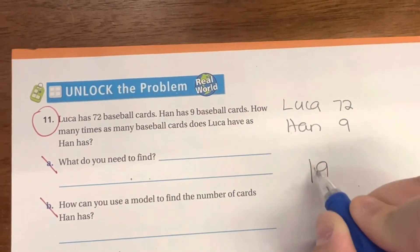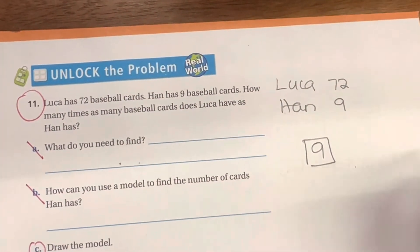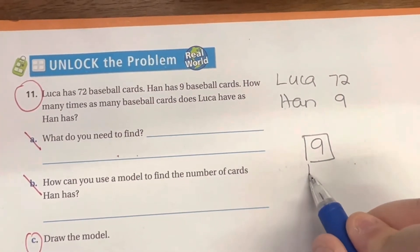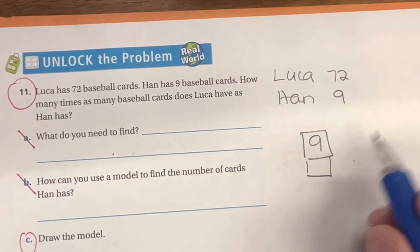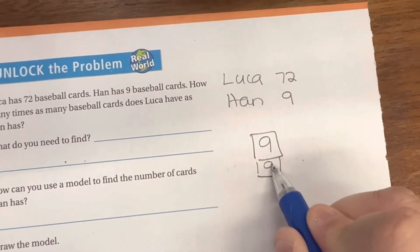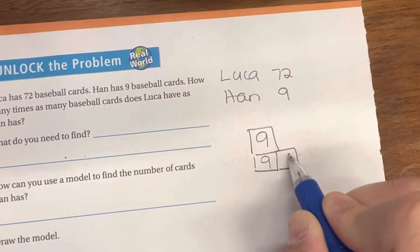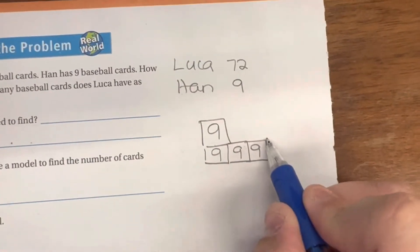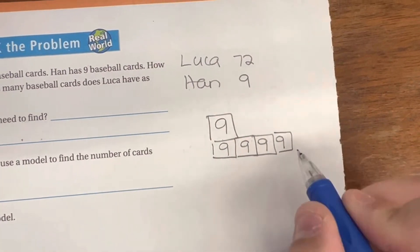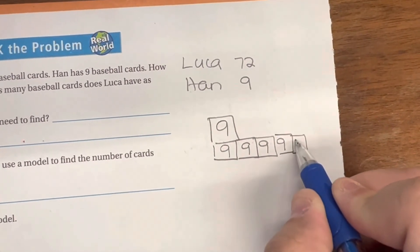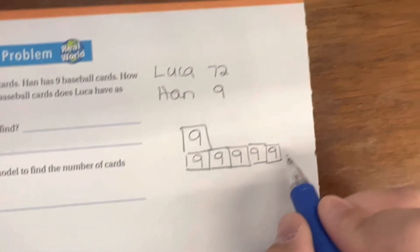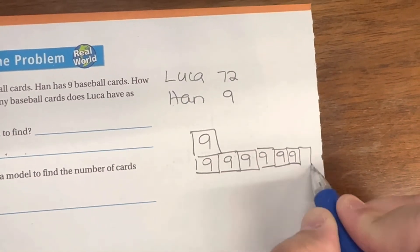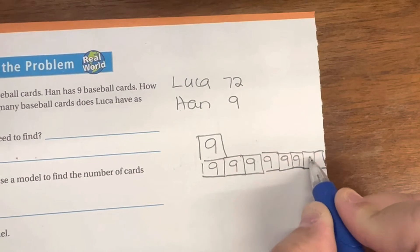So if Han has 9, how many of these 9s do I have to get to get to that 72? So you can start by drawing your little squares, right? So I have 1, that's 9. I have another 1, now I have 18. I have another 1, now I have 27. I add another 1, now I have 36. I have another 1, now I have 45. I'm running out of space, but I have another 1, now I have 54, 63, 72.